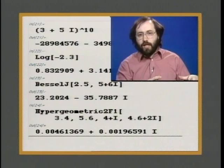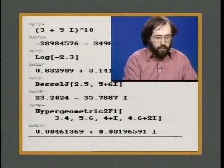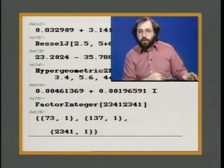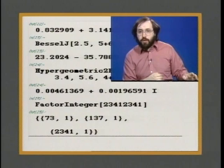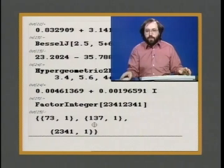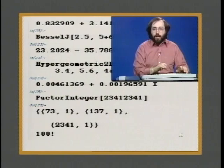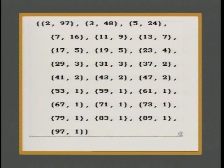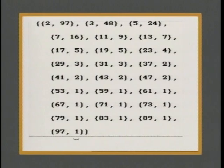Another class of calculations are ones involving just integers. For example, you could ask Mathematica to factor an integer. Let's type in a sort of random integer — after a short delay, Mathematica will show us the factors: 73 to the power 1, 137 to the power 1, and 2341 to the power 1. We can give it a slightly more difficult integer: let's work out 100 factorial and ask Mathematica to factor that. After a short delay, we get a sequence of all the primes starting at 2 and ending at 97, with 2 appearing 97 times and 97 appearing just once.